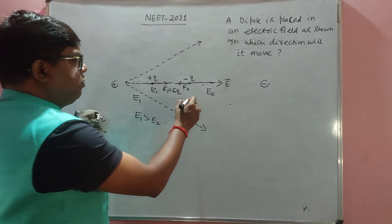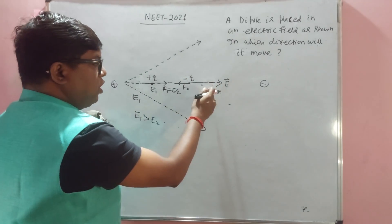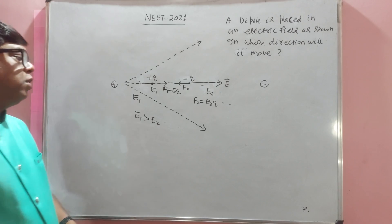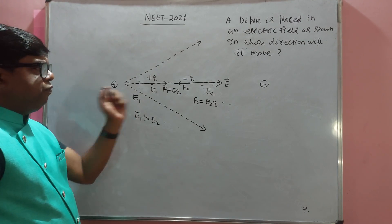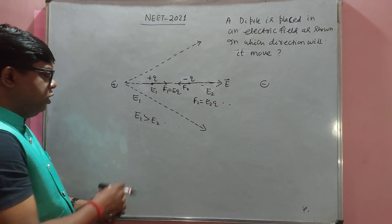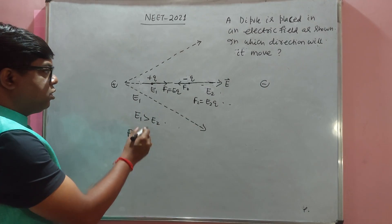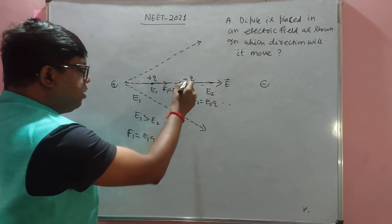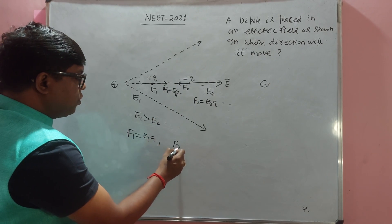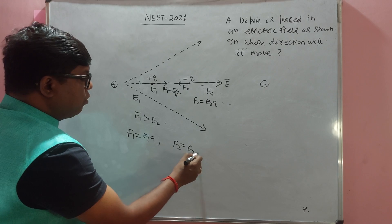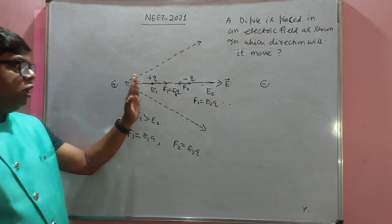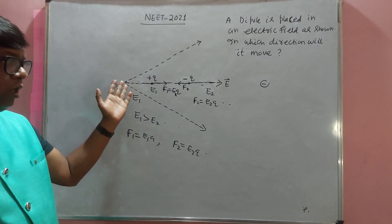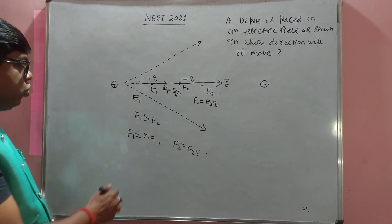The force on the positive charge is F1 = e1·q, and the force on the negative charge is F2 = e2·q. The electric field e1 on the left side of the dipole is greater than the electric field e2 on the right side.